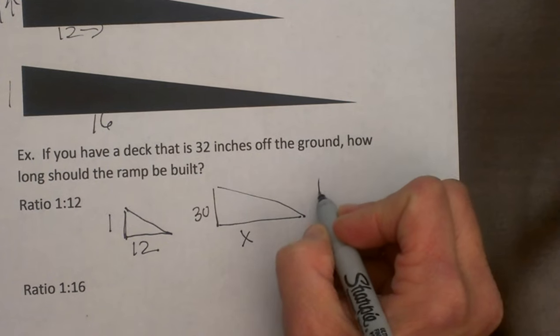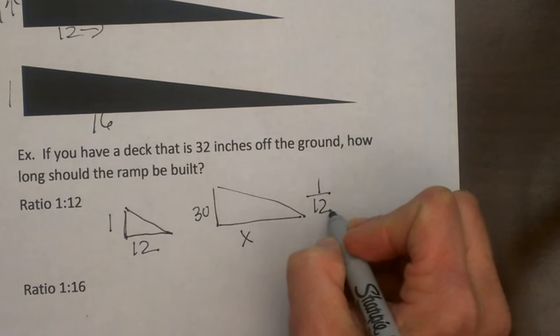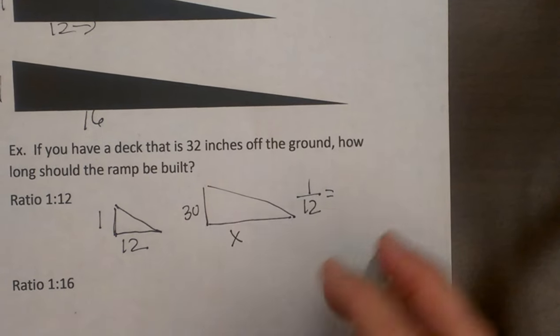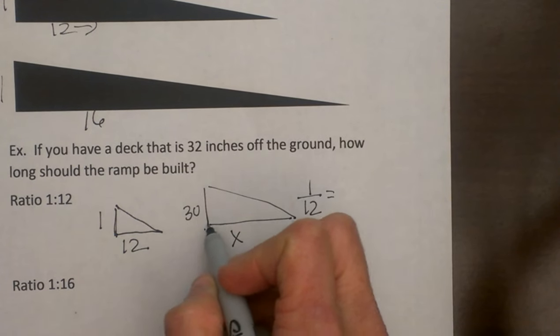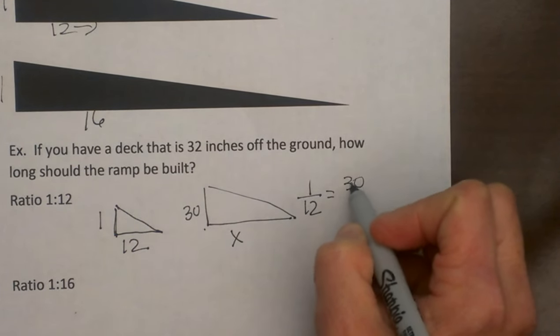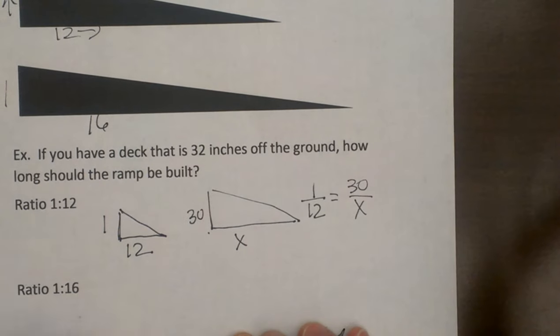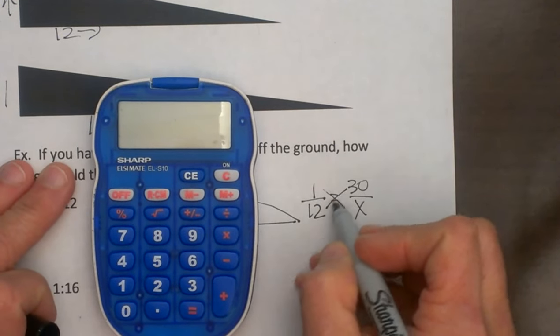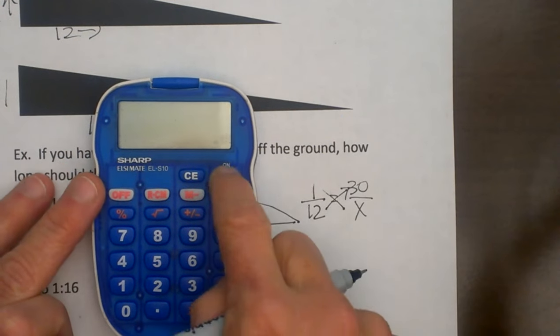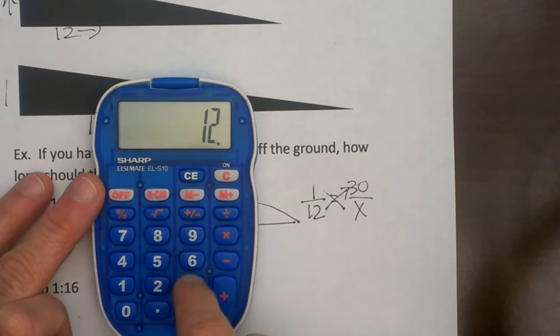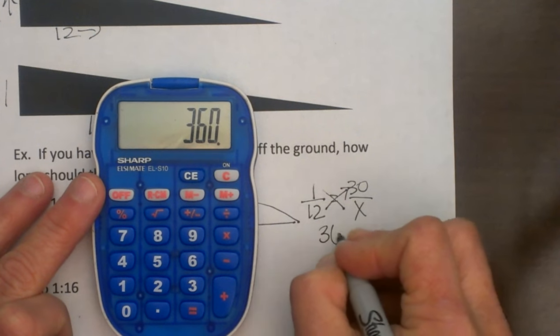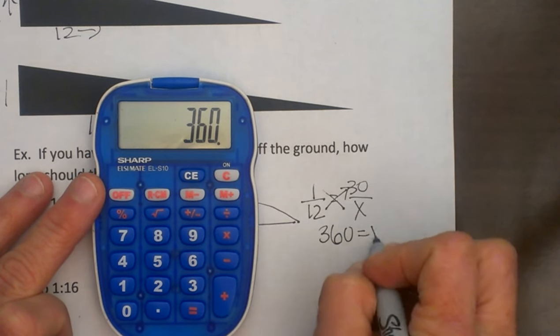I am going to set it up as 1 inch to 12 because that is the ratio I am trying to find, and I would set it up as 30 over x. Now from here to solve it, we just do a cross product. So we take 12 times 30 and we get 360, and then x times 1 or 1x.